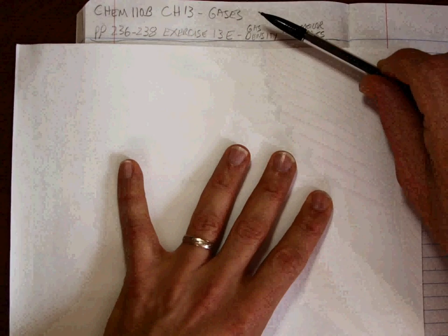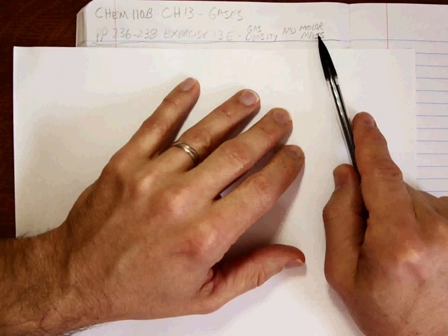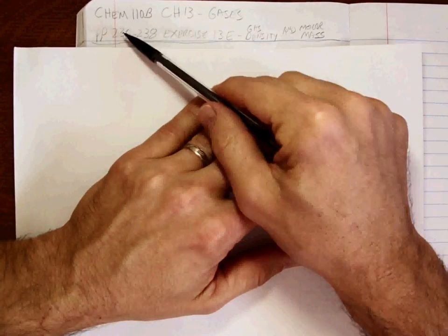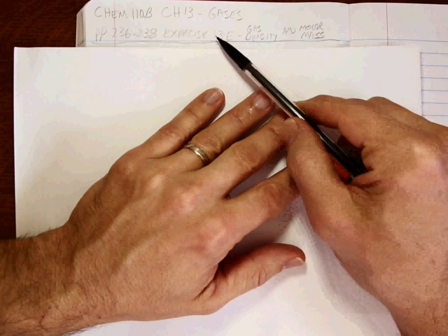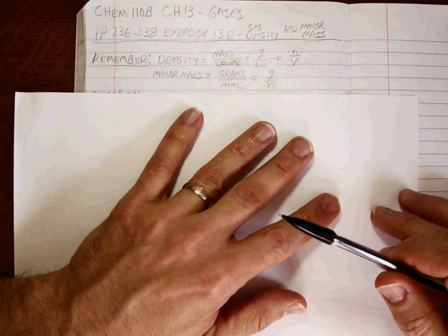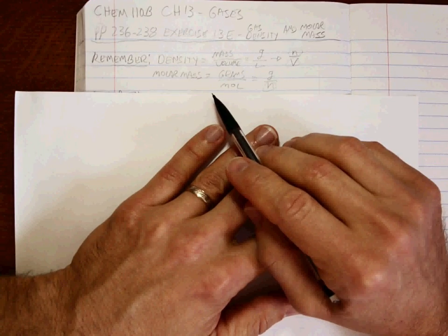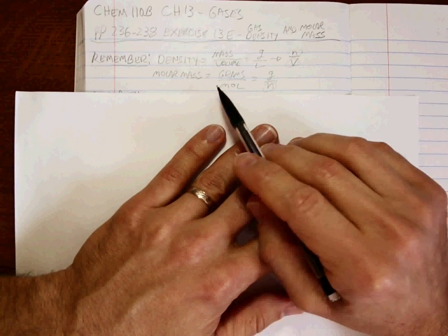Alright, last section in chapter 13 on gases is gas density and molar mass. That's page 236 through 238, exercise 13E. The key here is you better know the address that you're looking to get to. Otherwise, having a GPS doesn't do you any good.